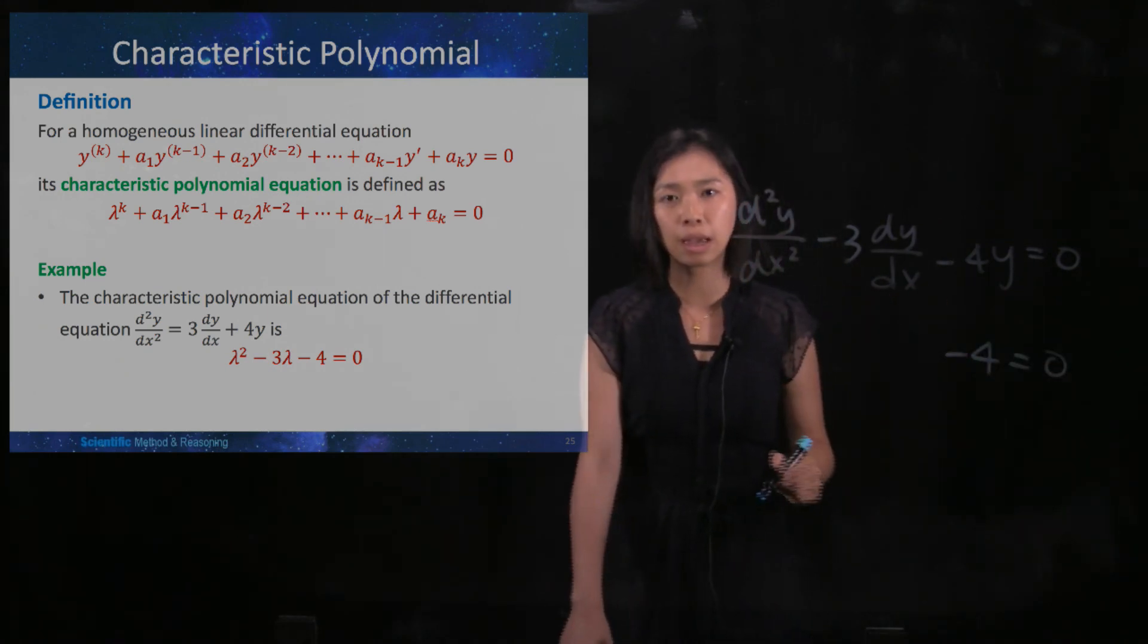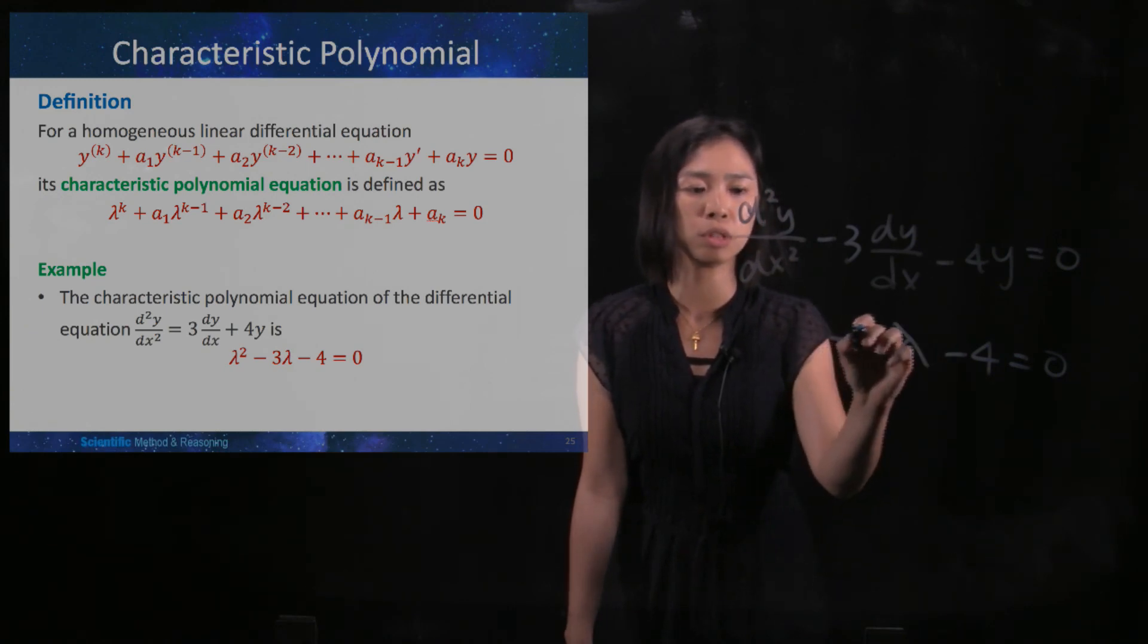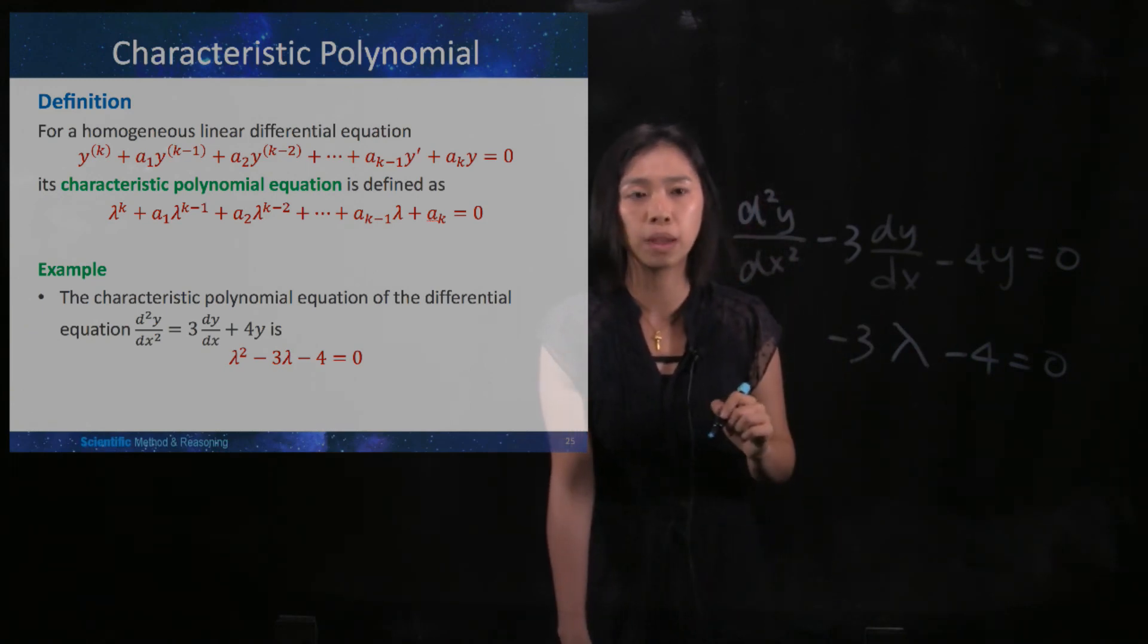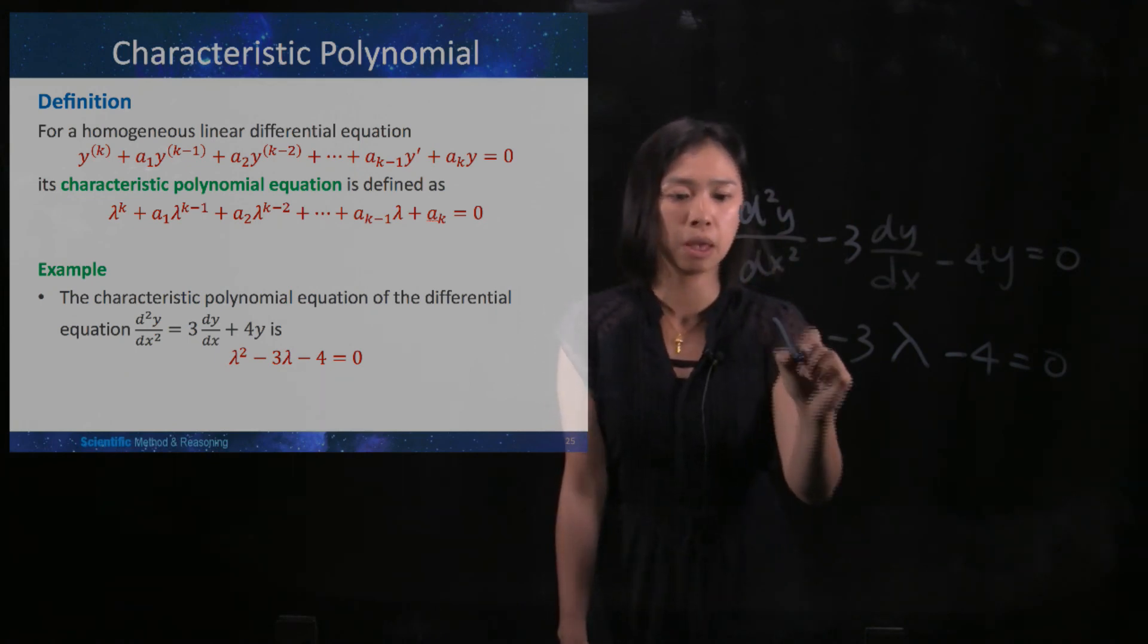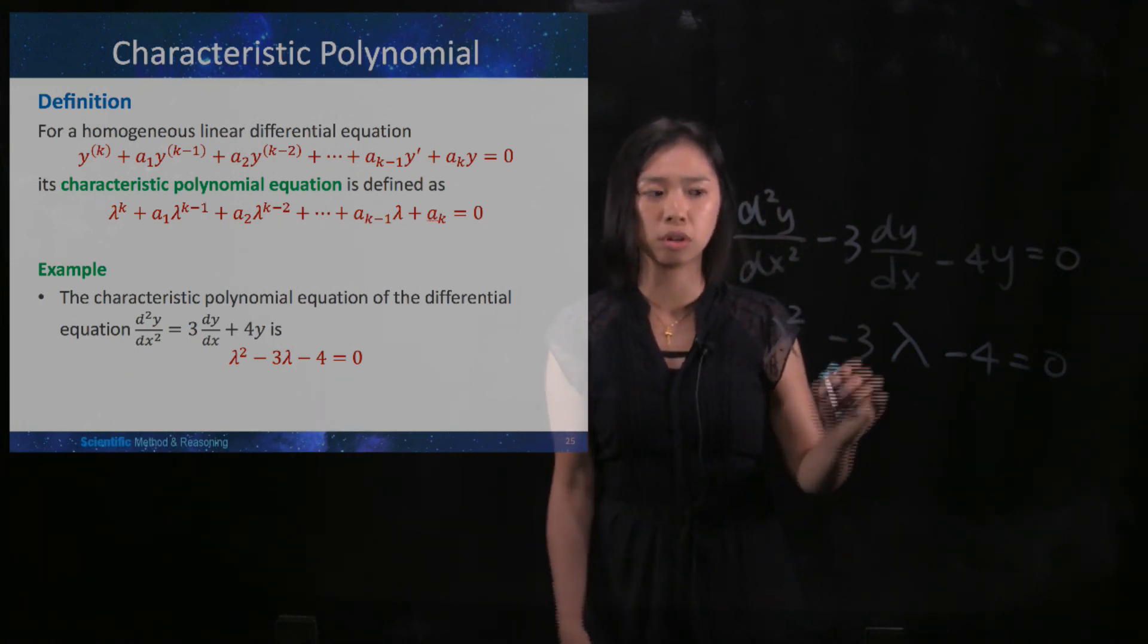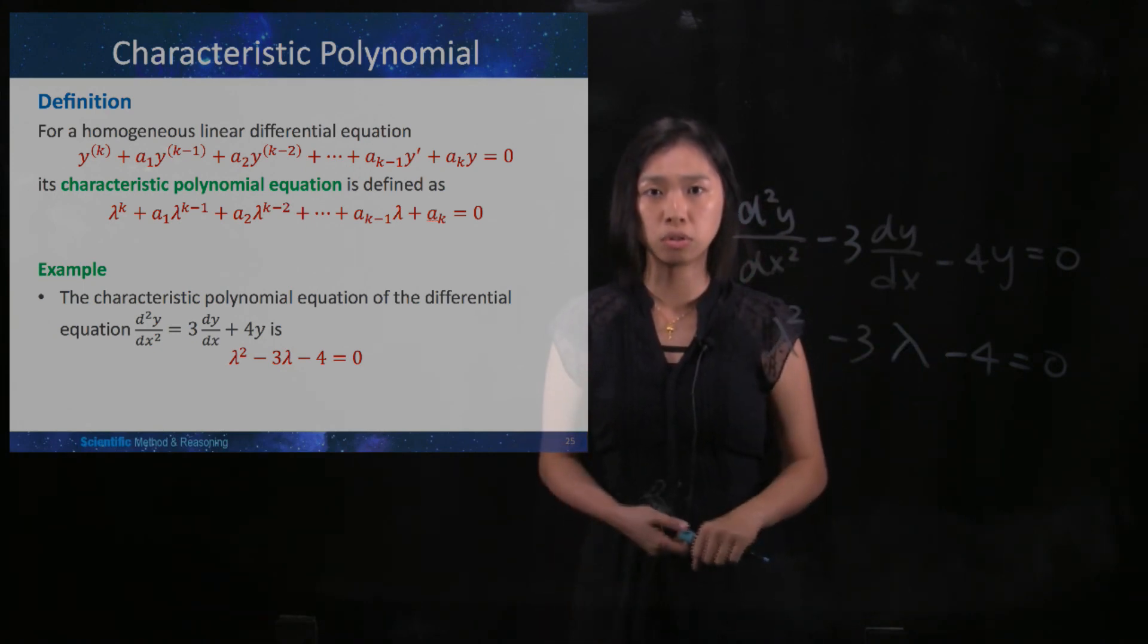And then your dy dx, or y differentiated one time, will become the lambda, and then you still keep the constant term. And then for this y being differentiated two times, it would be lambda squared. So this is the characteristic polynomial equation of this differential equation.